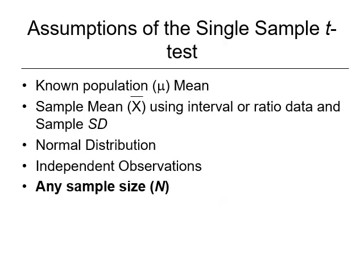The assumptions for the single samples t-test: we have to know the population mean, but that's it from the population side. We need the sample mean using interval or ratio data, the sample standard deviation, and the sample size n. We need to ensure the sample data is normally distributed. The sample's observations must be independent — not directly influenced by the population. The big advantage is that any sample size can be used.